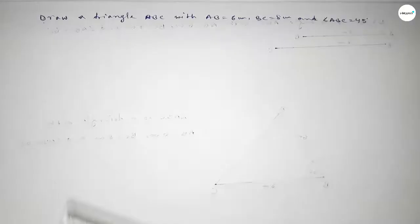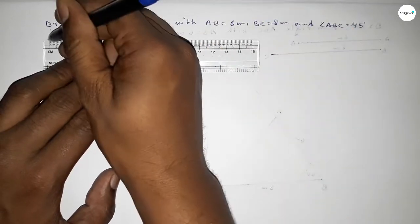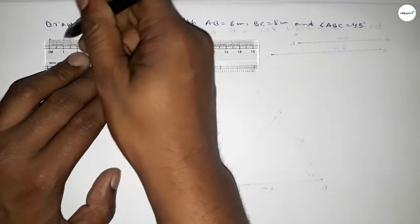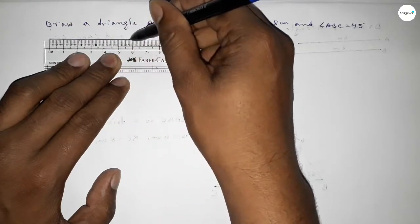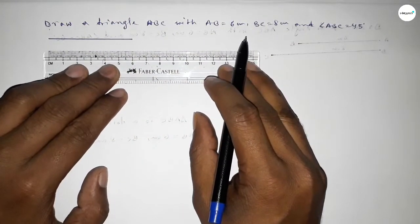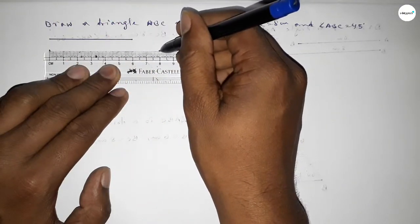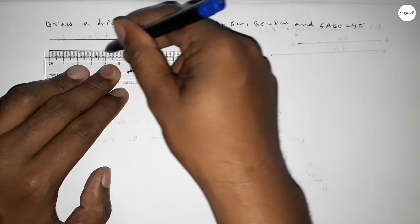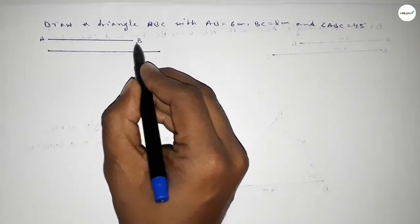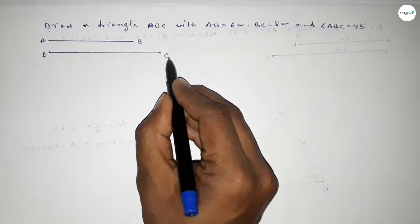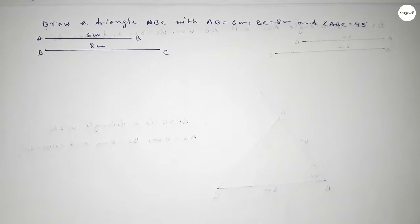First of all, we have to draw a line of length 6 centimeter — that is 0, 1, 2, 3, 4, 5, 6. Next, drawing another line of 8 centimeter — 0, 1, 2, 3, 4, 5, 6, 7, 8. This one is the AB line and this one is BC, so AB equal to 6 centimeter and BC equal to 8 centimeter.